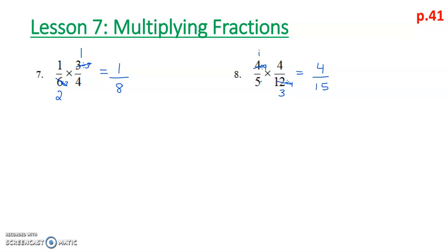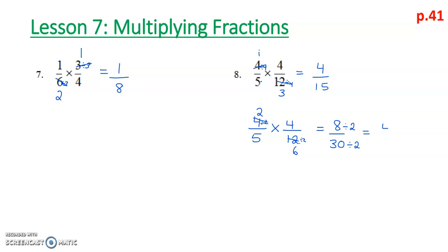Now let's say you made an error in what you divide by — that happens to us all. Suppose you divided 4 and 12 by 2 instead: 4 divided by 2 is 2 and 12 divided by 2 is 6. Then 2 times 4 is 8 and 5 times 6 is 30. It's really important to check if your answer is in lowest terms. 8 over 30 is not, so you reduce: 8 divided by 2 is 4, and 30 divided by 2 is 15. You'll still arrive at the same result — it may just take one, two, or three extra steps.